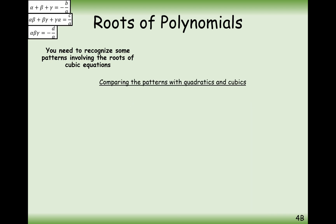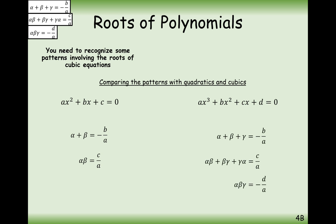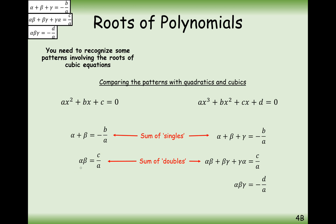Let's compare the patterns between quadratics and cubics. For both, the sum of the roots equals −b/a. For the doubles: with two roots there's only one way to pair them, αβ = c/a; with three roots there are more pairs, but it still equals c/a. The pattern alternates sign: sum of singles is −b/a, sum of doubles is c/a, and sum of triples is −d/a. Start on b as negative and alternate from there.